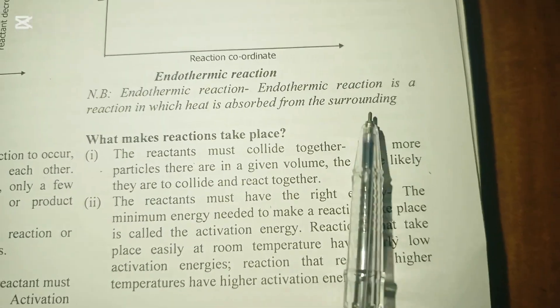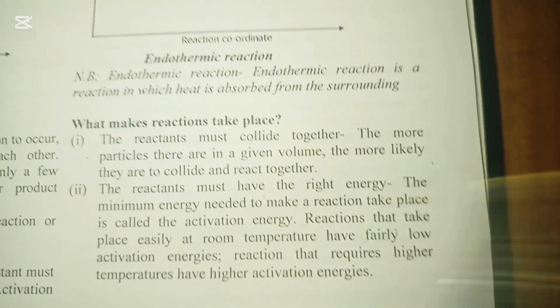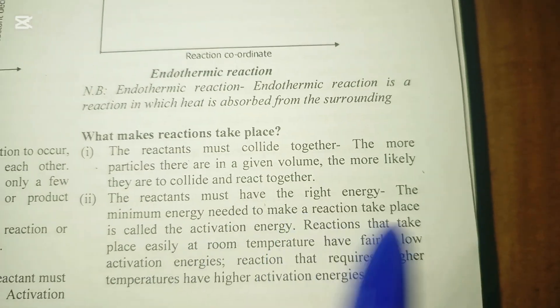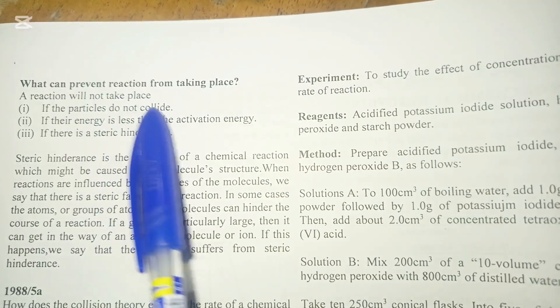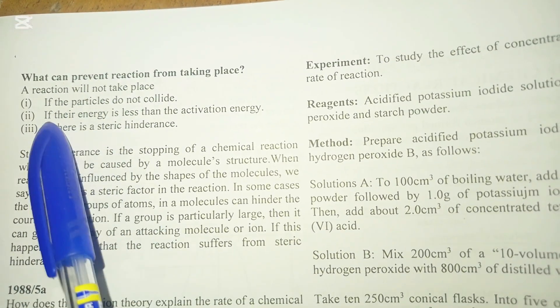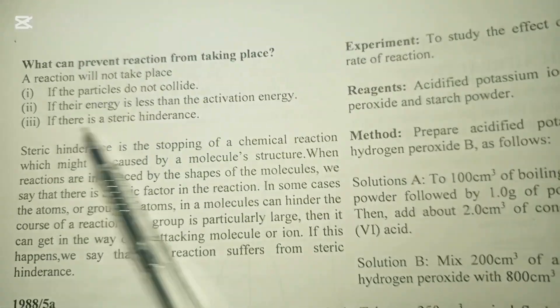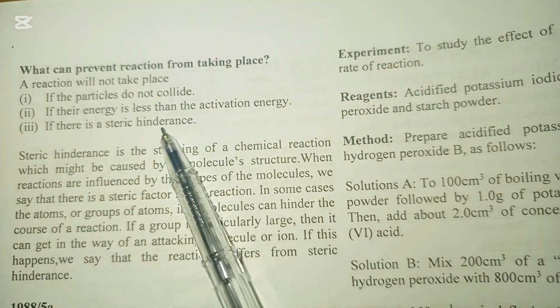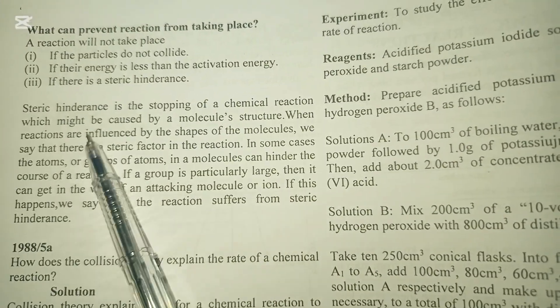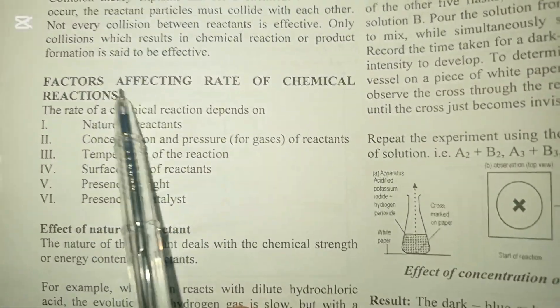What makes a reaction take place? Number one: the reactants must collide together. Number two: the reactants must have the right energy — they must possess the minimum energy needed, which is called activation energy. What can prevent a reaction? One, if the particles do not collide. Two, if the energy is less than the activation energy. Three, if there is steric hindrance — that is the stopping of a chemical reaction caused by a molecule's structure.